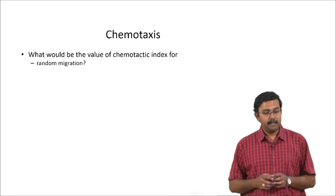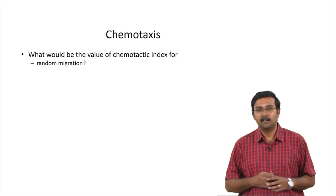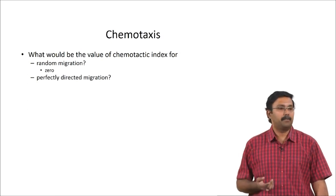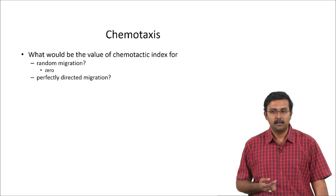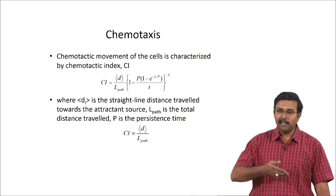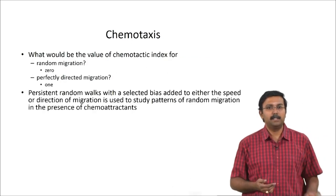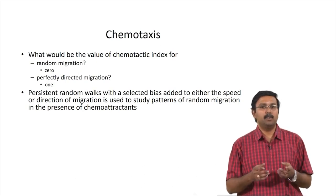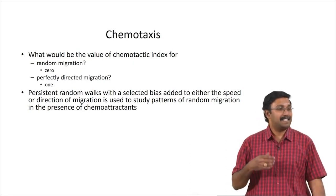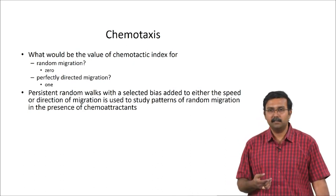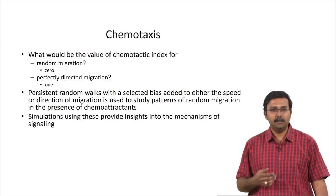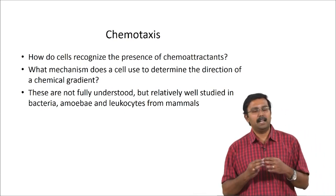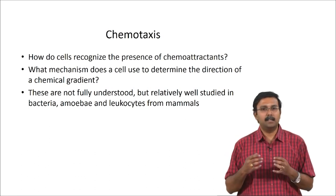The chemotactic index (CI) is the term used to characterize chemotactic movement, given by CI = D/L_path, where D is the straight-line distance traveled by the cell towards the attractant and L_path is the total distance traveled. For random migration, the chemotactic index would be 0, and for perfectly directed migration it would be 1 (since D equals L_path). Persistent random walks with selected bias added to either speed or direction can be useful for studying migration patterns in the presence of chemoattractants. However, it is still not fully understood how mammalian cells recognize the presence of chemoattractants and determine the direction of the chemical gradient — this is well understood in bacteria and other unicellular organisms, but not sufficiently studied in mammalian cells.